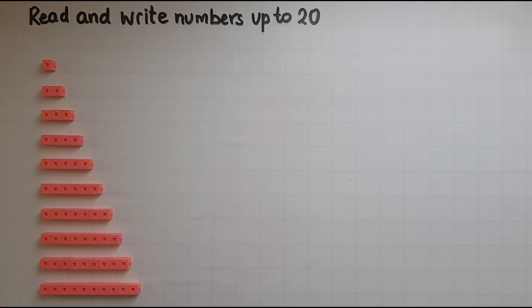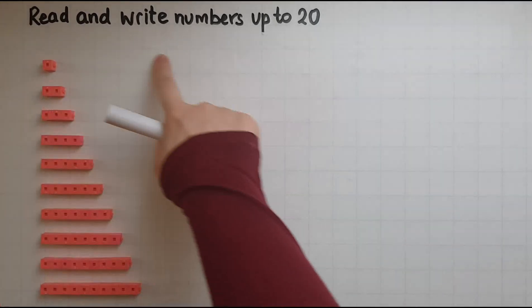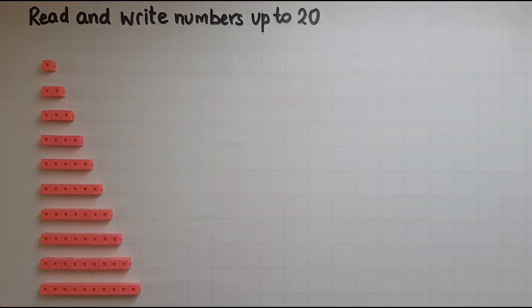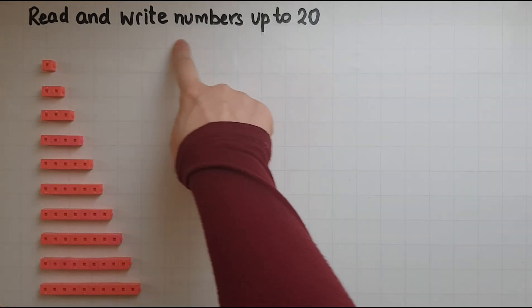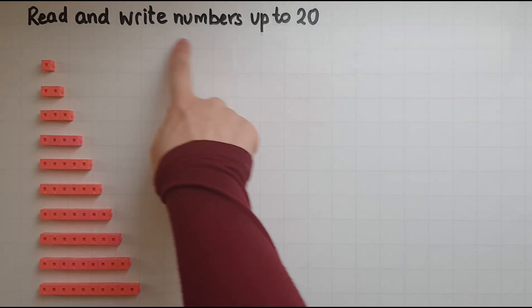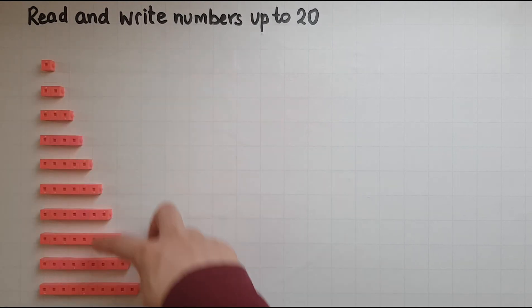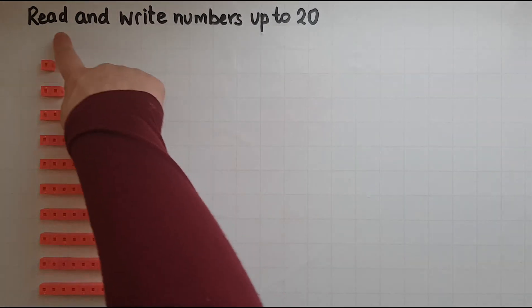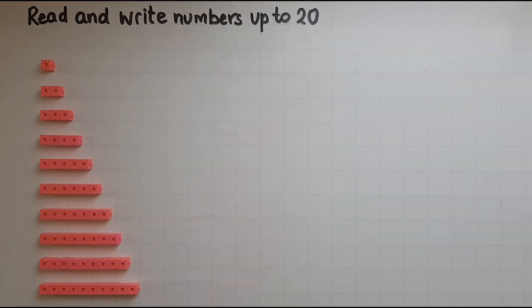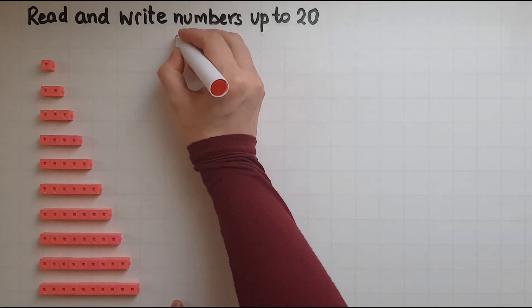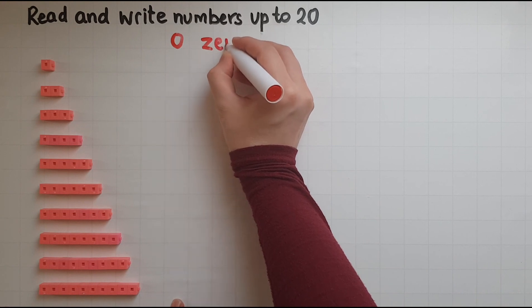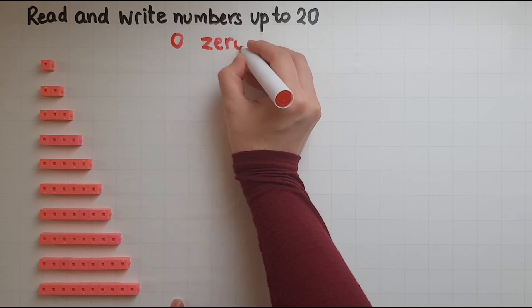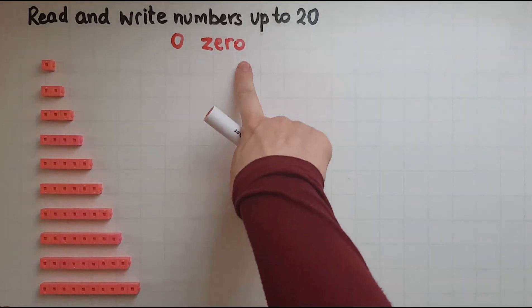In this video we'll learn how to read and write numbers up to 20. In this very first row I have no cubes. There are no cubes in there, so there I have zero cubes, which is written in words as zero.